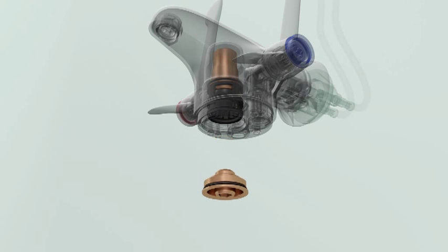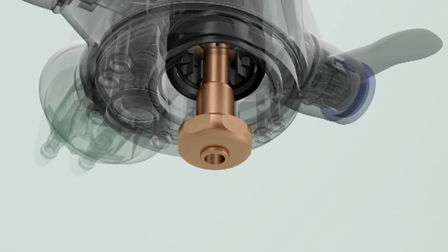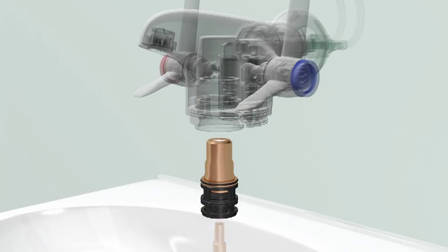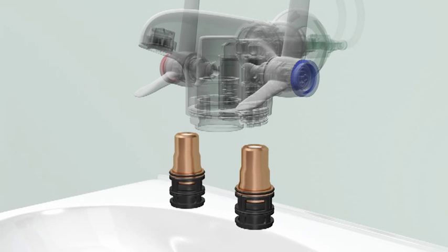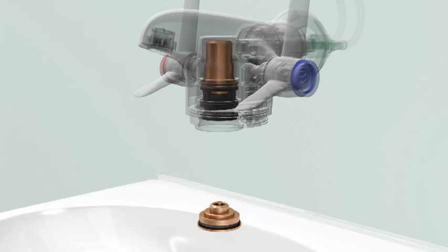Use the 12mm hex key to remove the cover of the thermostatic cartridge. Screw in the thermostatic cartridge removal tool then pull downwards to release the cartridge. A new cartridge can be inserted into the tap body from below. Replace the cartridge cover with the 12mm hex key.